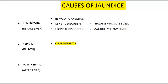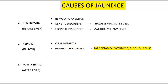Now let's jump into the hepatic causes. Viral hepatitis is a big one — any of the viral hepatitises, hepatitis A, B, C, D, E can cause some level of jaundice, some more than others. Hepatic toxic drugs, paracetamol overdose, and alcohol abuse are two more causes. And liver cancer.